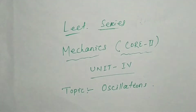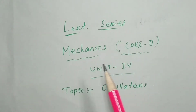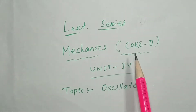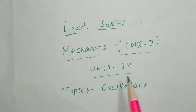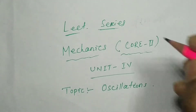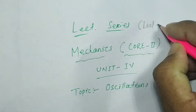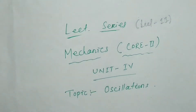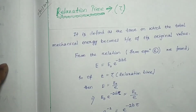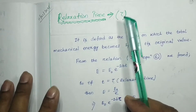Good morning to all of you. Welcome to our lecture series on mechanics, that is your core paper 2. We are discussing unit 4, the topic is oscillations. This is our lecture number 11, and in this lecture we are going to discuss about relaxation time, that is tau.